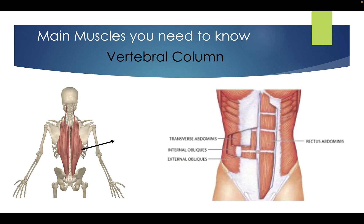The main muscles you need to know in the vertebral column: we've got our rectus abdominis, our transverse abdominals, our internal obliques and our external obliques. The transverse abdominis sits slightly behind the rectus abdominis. The internal obliques are slightly inside and our external obliques are the ones you see on the outside.